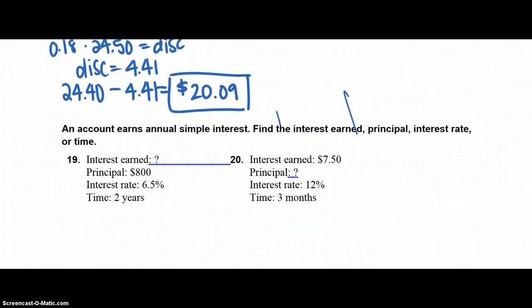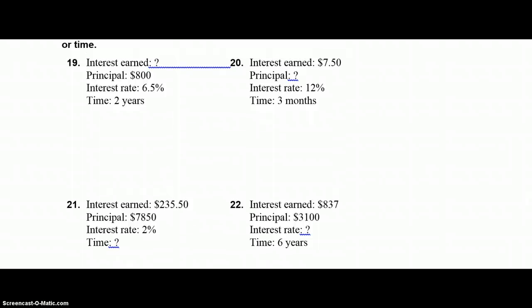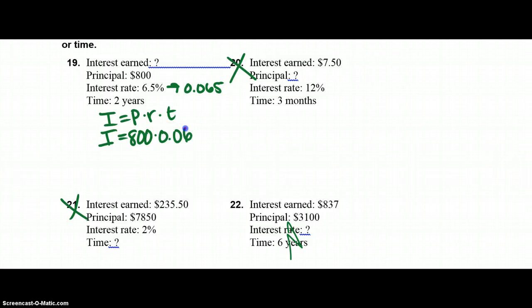Moving right along, now we're on to simple interest. These are the easy, simple interest problems, because I give you I and P and R and T. I believe I had you cross out number 20 and 21, so we're just focusing on 19 and 22. So I equals P times R times T. I'm trying to find I, so I multiply that by 800, the rate as a decimal. Don't forget that part, so 0.065. And time has to be in years, in this case it is. So in my calculator I'm doing 800 times 0.065 times 2, and the interest is $104.